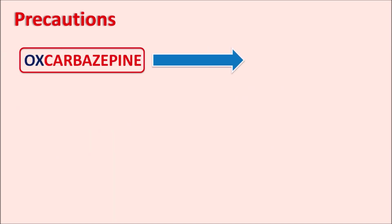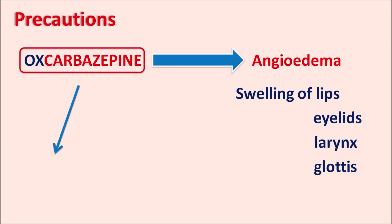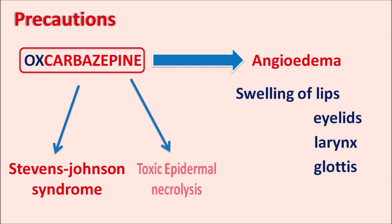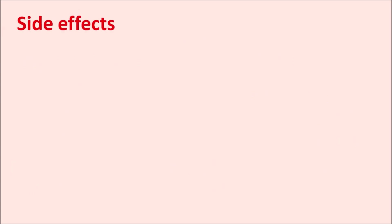Oxcarbazepine can produce angioedema as a hypersensitive reaction, causing swelling of the lips, eyelids, larynx, and glottis. It can also produce severe hypersensitive reactions such as Stevens-Johnson syndrome or toxic epidermal necrolysis, both of which are fatal skin and soft tissue conditions. These hypersensitive reactions are more commonly associated in patients who carry the HLA-B*1502 allele.